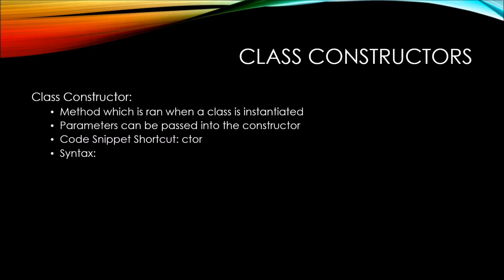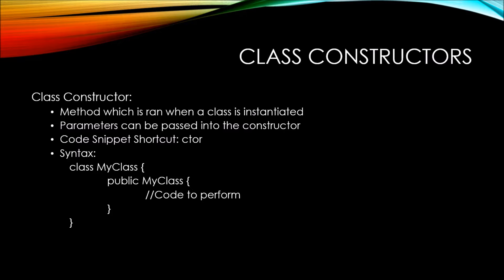Here's the syntax of a class constructor. Let's assume we have a class called myClass. Inside the scope of this myClass class, we can define a public method of the same name as the class. So our public method is called myClass. Inside the scope of this myClass method, we can put in the code that we wish to perform. Let's take a look at an example of this.